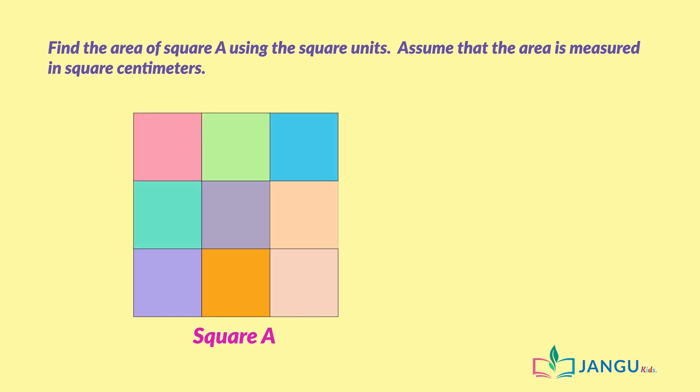Can you see numerous unit squares in the bigger square? Great! To find the area of square A, we need to count the number of unit squares in it. We have 1, 2, 3, 4, 5, 6, 7, 8, 9 squares.